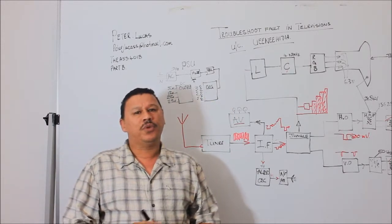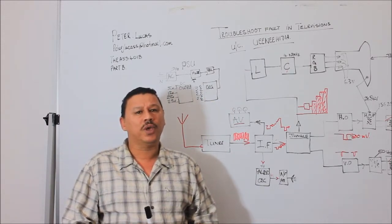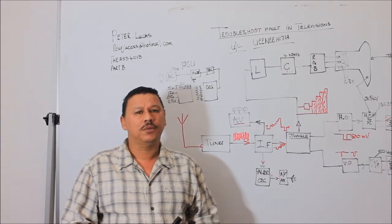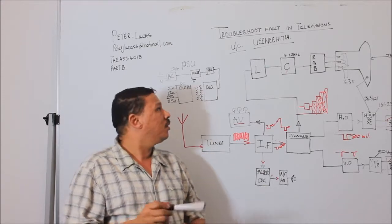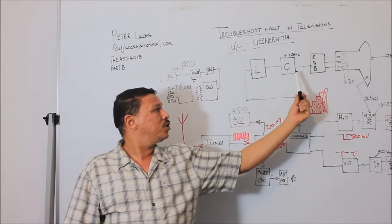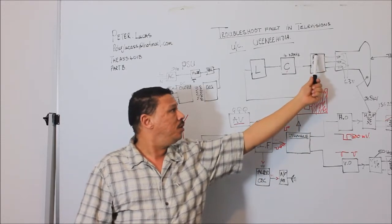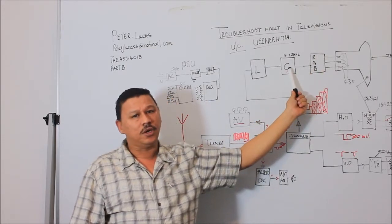If there's a fault with color, if you have no color or the color is swapped around like green is in the place of black and yellow is in the place of cyan. Typical situation would be either the RGB or the color circuit, chrominance circuit.